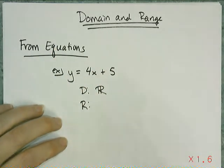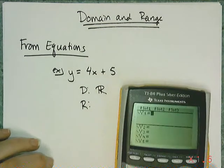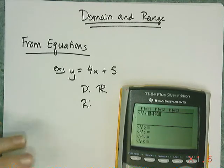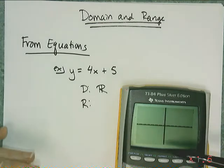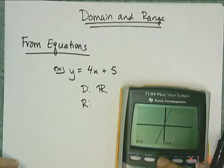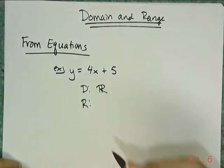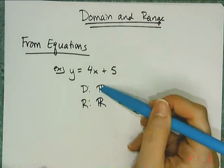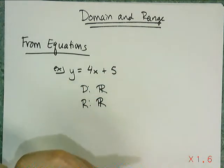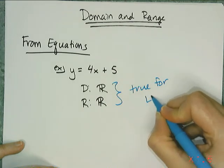For the range, I'm going to use my graphing calculator as a helpful tool. I'm looking for the y values. If I go to the graph, it looks like I can get all those y values. If I zoom out, I can still get all those y values. So the range of this function also happens to be all real numbers. That's true for all linear functions — domain and range are just all reals.